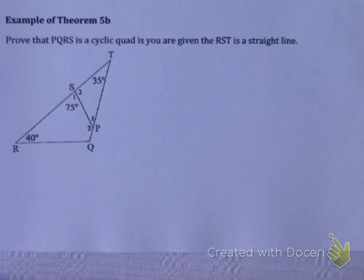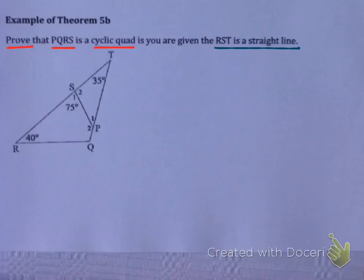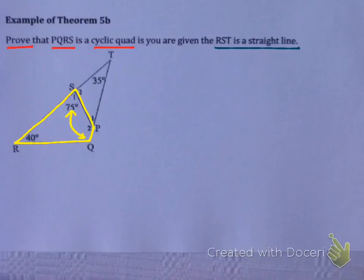Let's look at an example. Prove that PQRS is a cyclic quad, given that RST is a straight line. To prove something is a cyclic quad we have two options: butterfly angles from Theorem 4b, or opposite angles supplementary. I don't see a pattern for Theorem 4b here, so I'll try to prove that 75 plus angle Q equals 180, or that 40 plus P2 equals 180. So I need to find either angle P2 or angle Q.